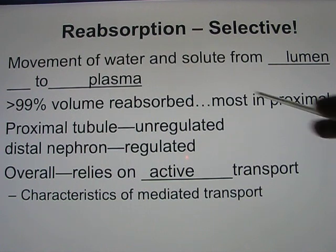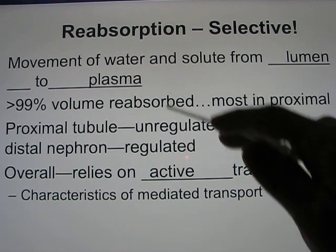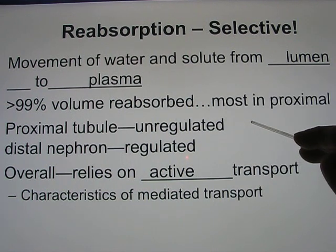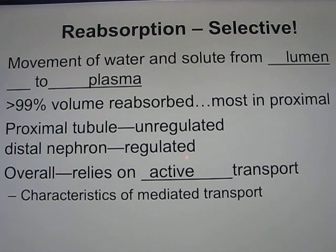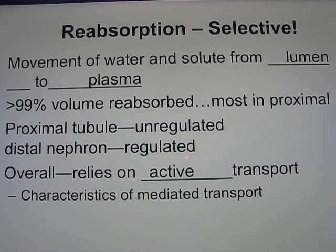In the proximal tubule, over 80% of reabsorption is unregulated. The other 20% is regulated, depending on your body's needs. You'll find your urine will be more concentrated or more diluted depending on how much water you drink — it depends on your body's situation.